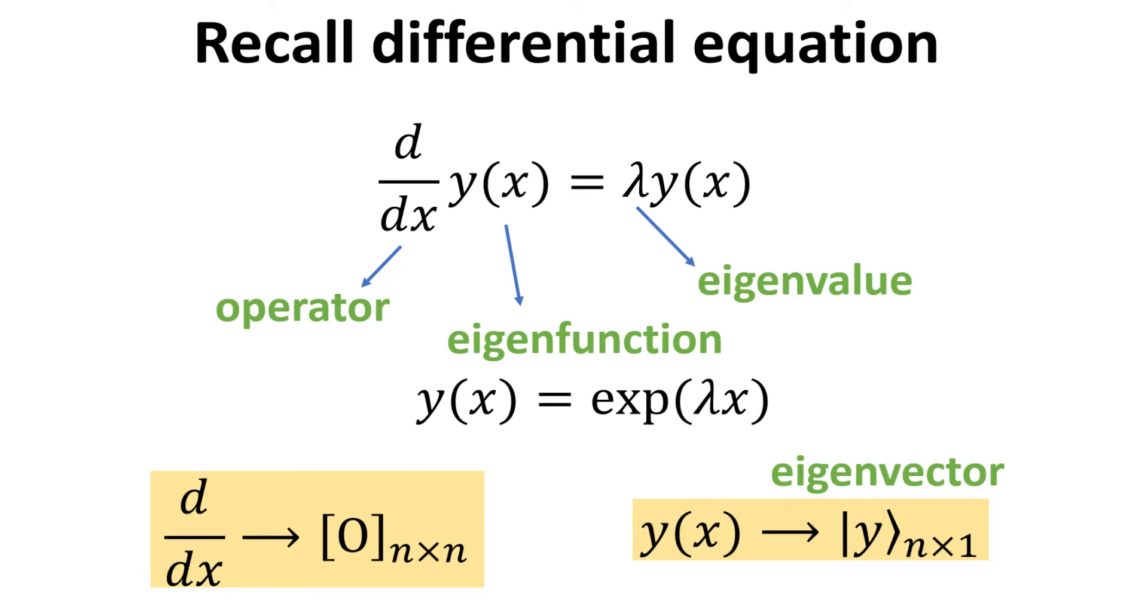We should be familiar with differential equations of the form as shown here. The differential operator acts on the function y and produces the same function y but scaled by a constant factor given by the constant lambda. y is called the eigenfunction, while lambda is the eigenvalue.